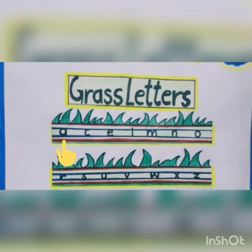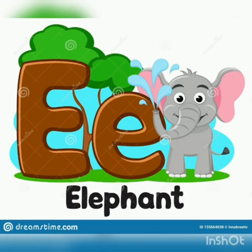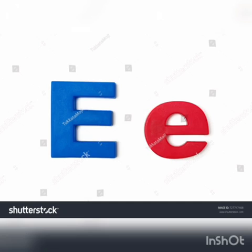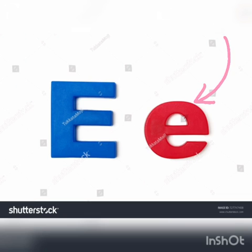We have learned A, then we have learned C. Today we will learn a new grass letter: E. This is the letter E. E says E. Letter E has two sounds — long sound E and short sound E — like eggs and eagle.